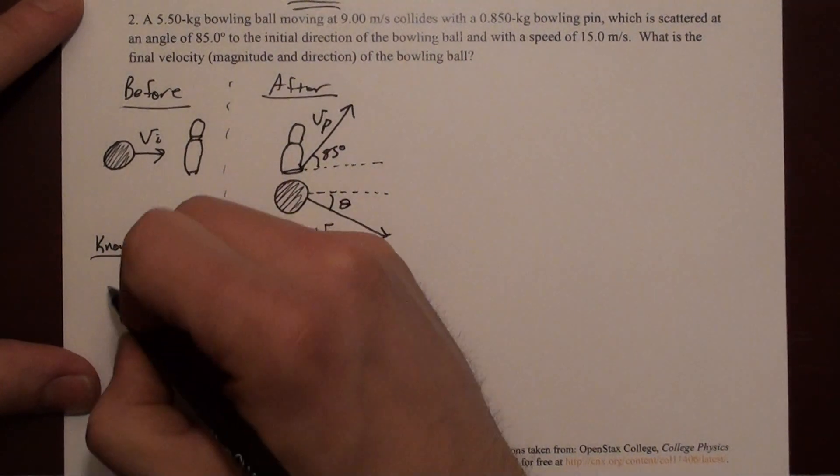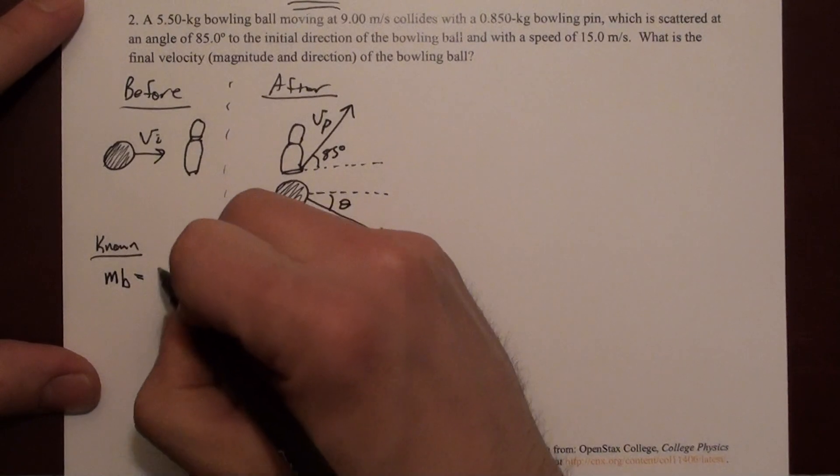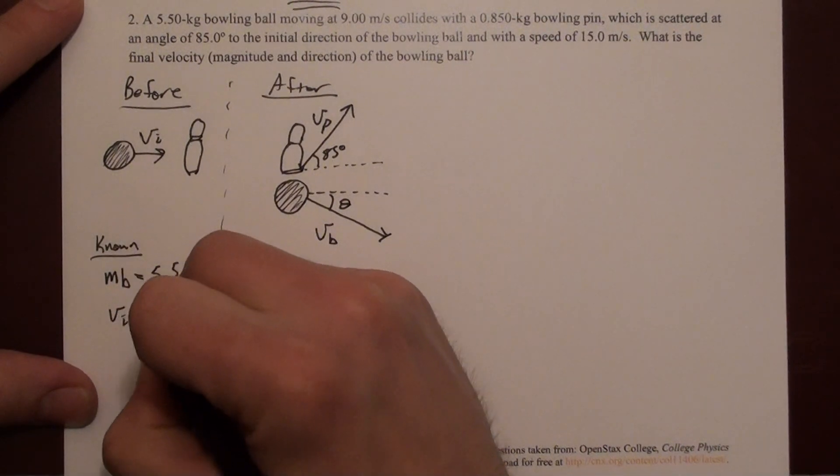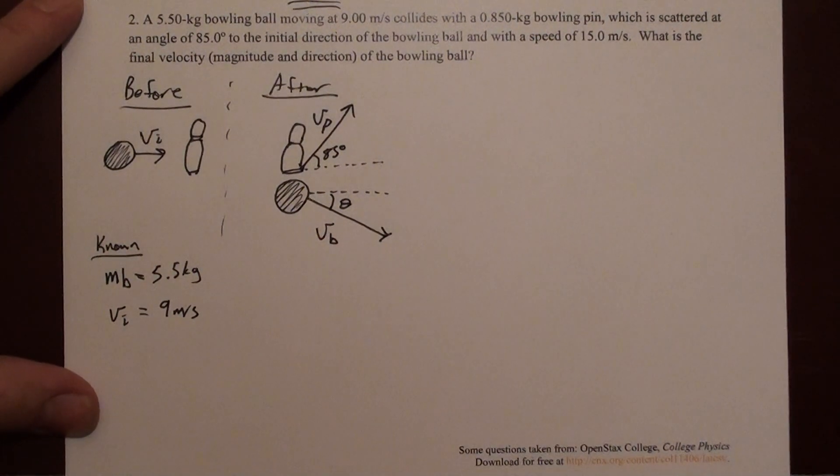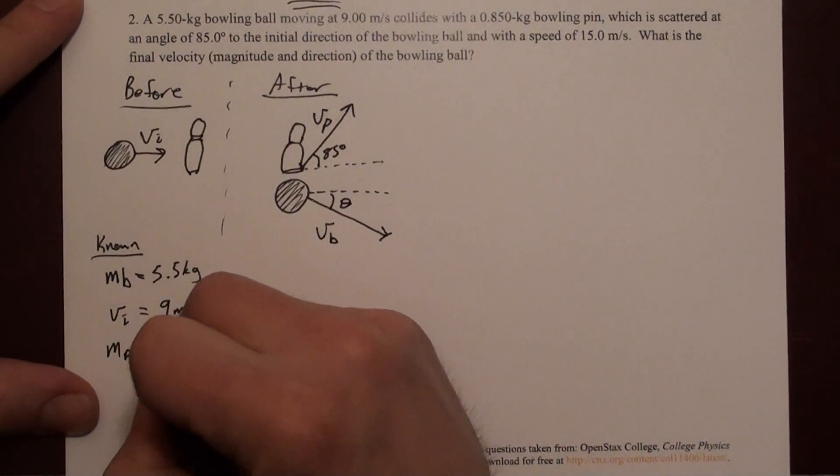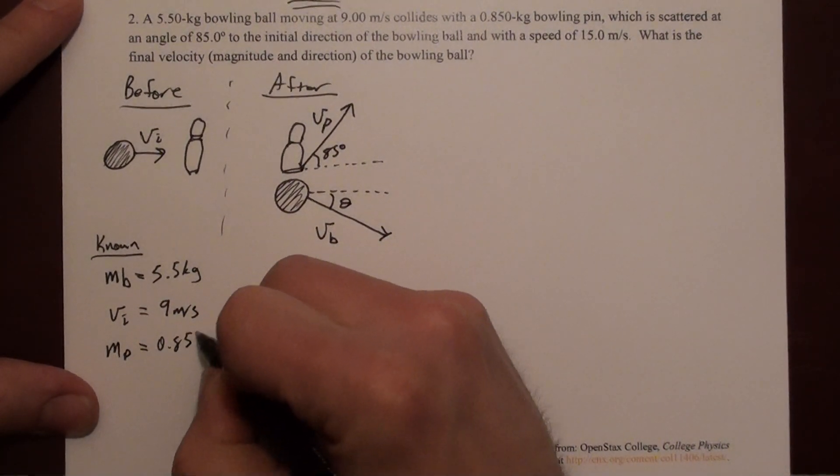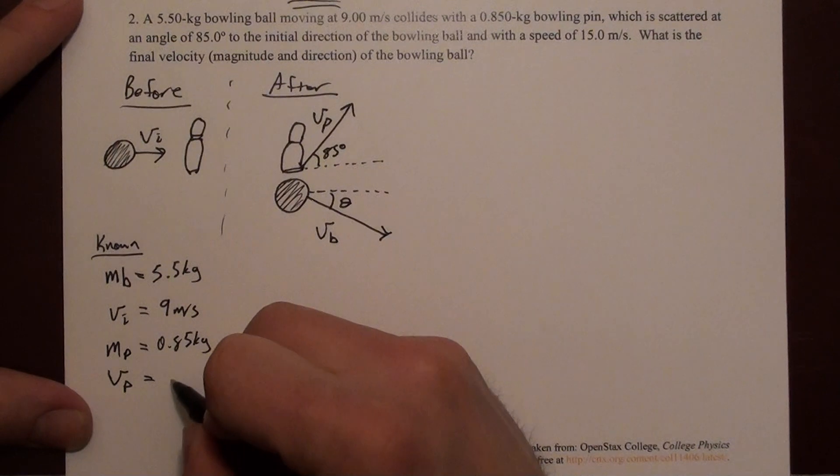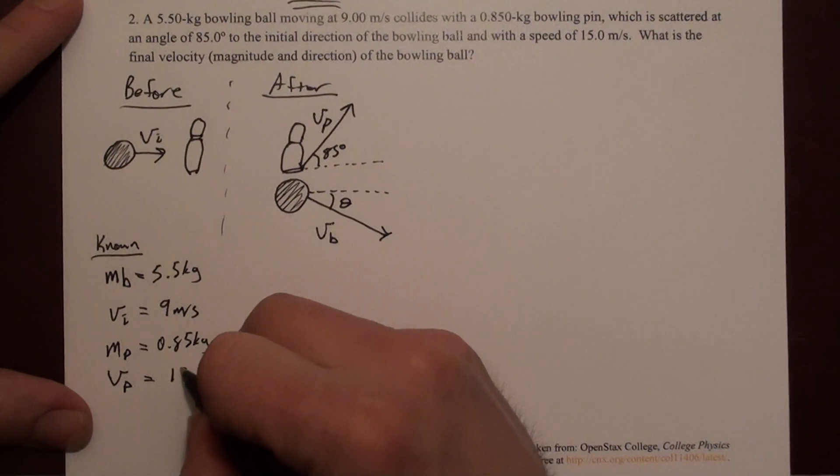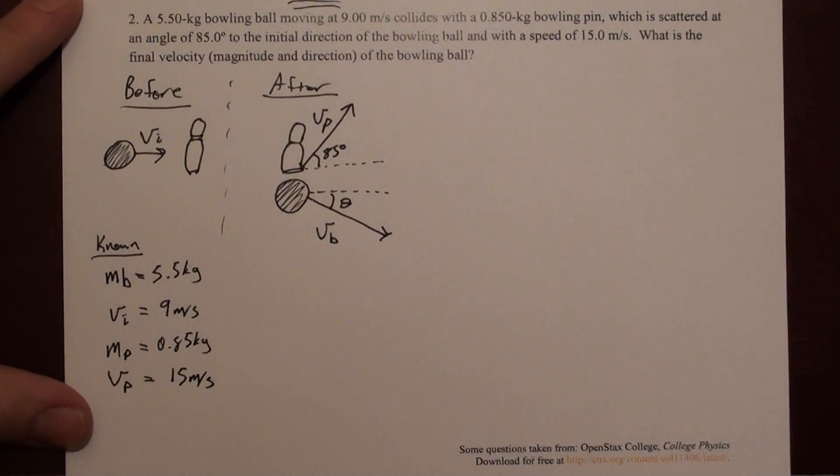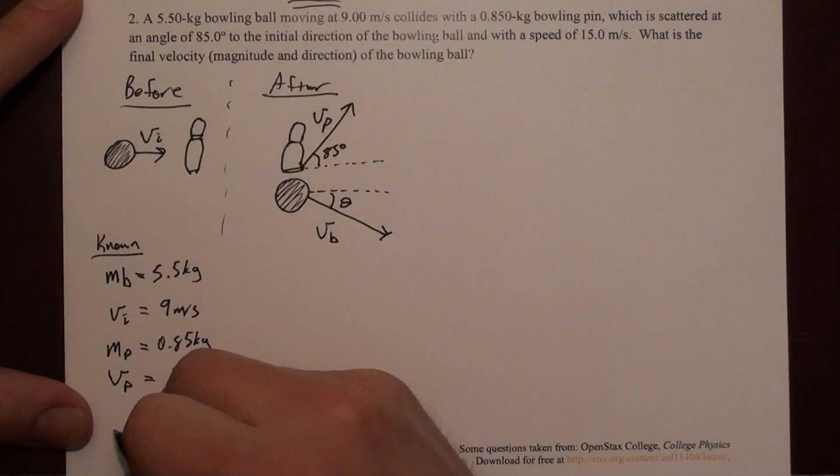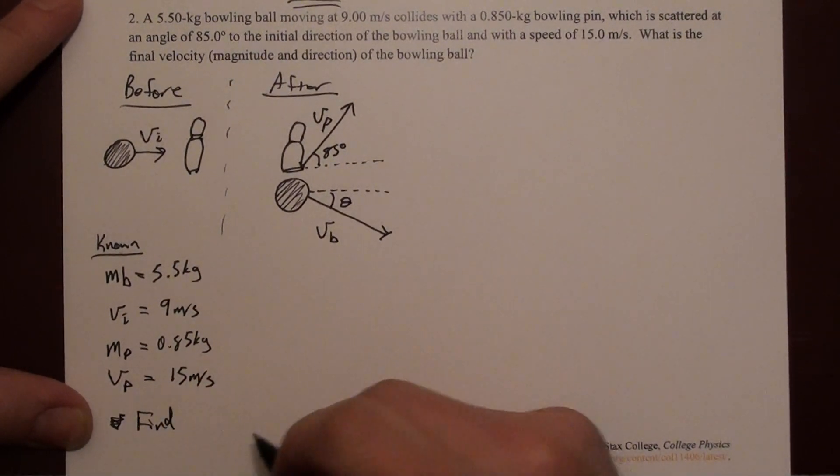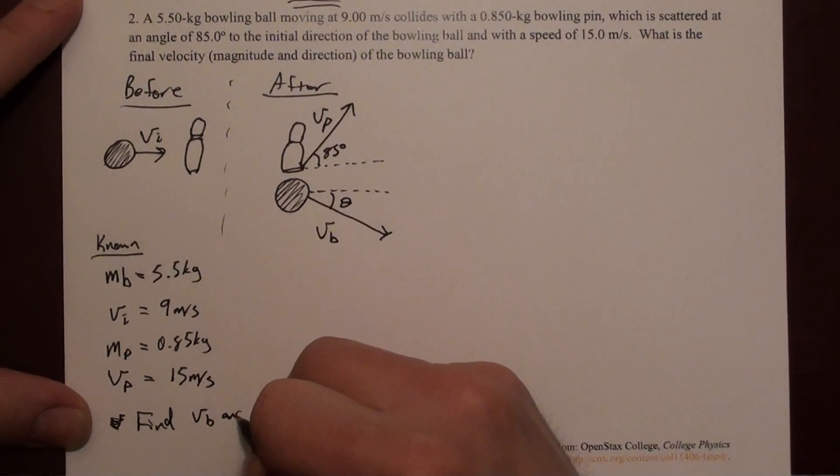Let's collect our known values. We're given the mass of the bowling ball as 5.5 kilograms. We're given the initial speed as 9 meters per second. We know the mass of the pin is 0.85 kilograms. We're also given the speed of the pin afterward as 15 meters per second. We're solving to find vb and theta.